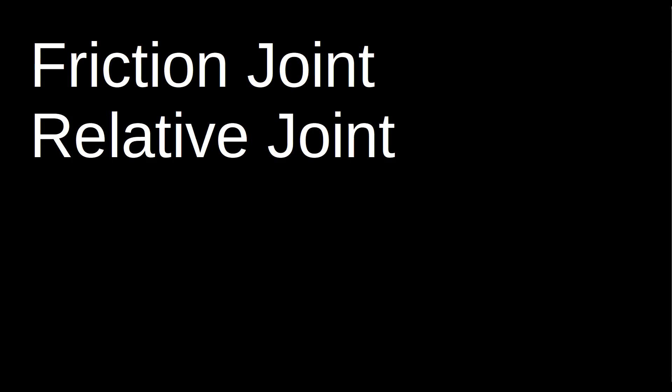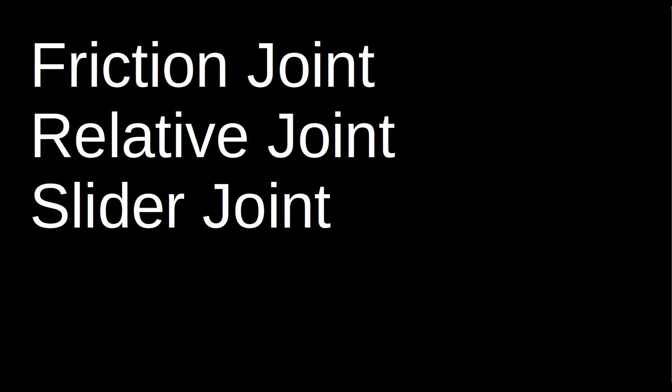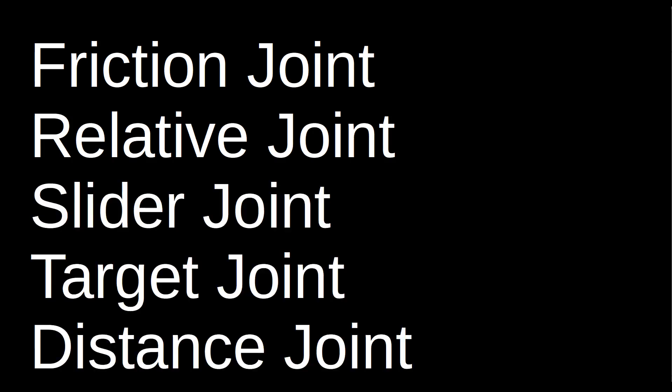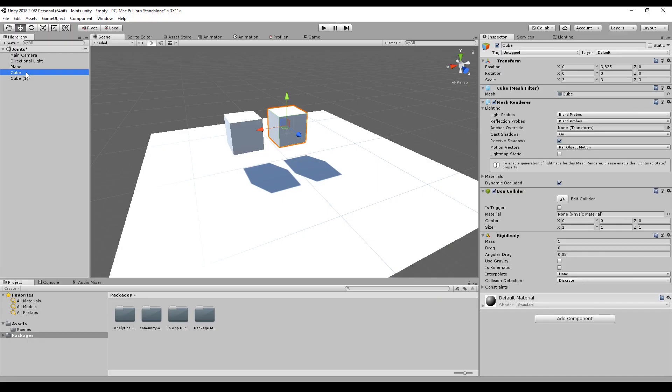There are a few 2D joints in Unity that are actually missing in 3D: the friction joints, the relative joints, the slider joints, the target joint, and the distance joint. But what you can do is simulate them in 3D space. I've put all the time codes in the description to the specific joints so that you can jump right to them.